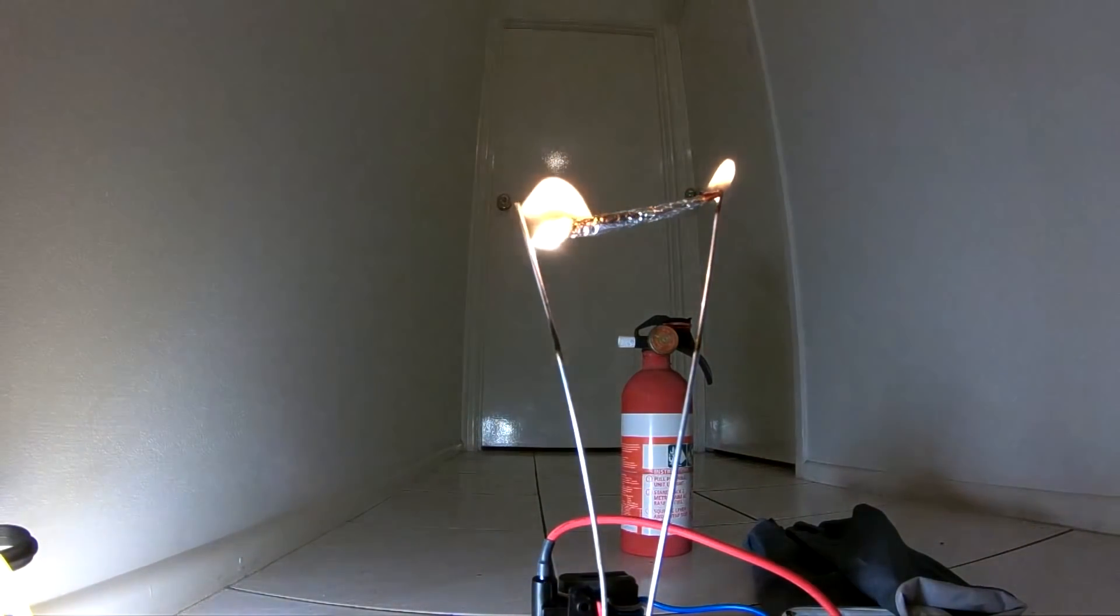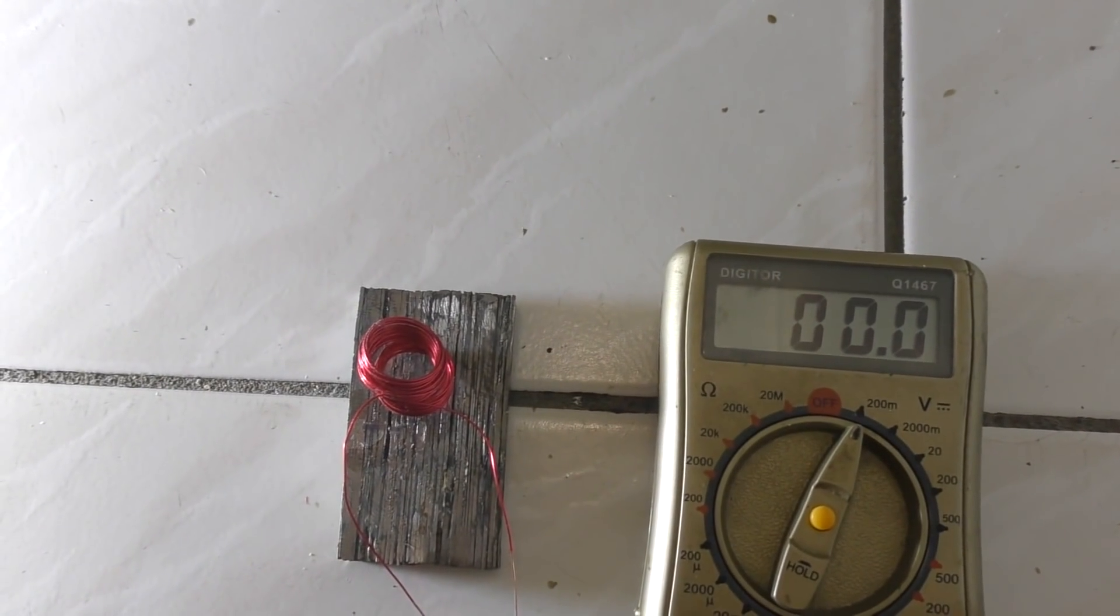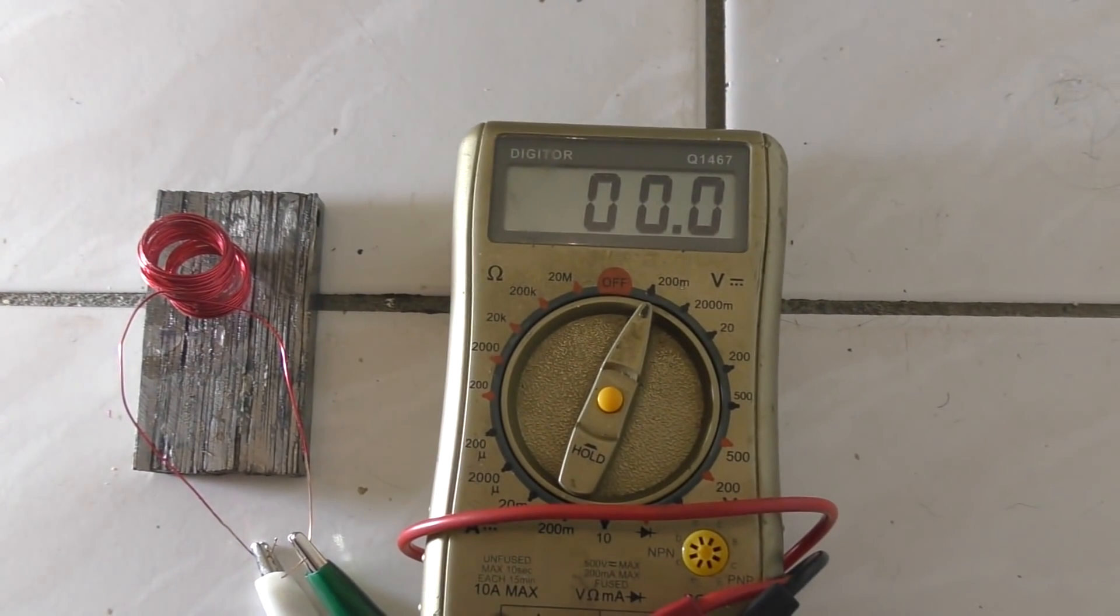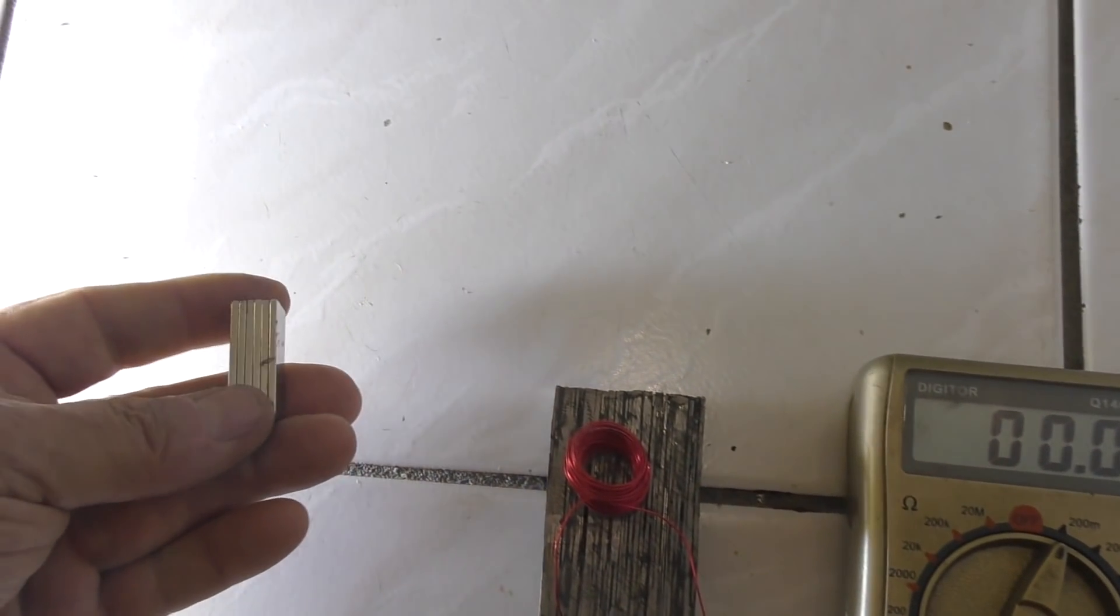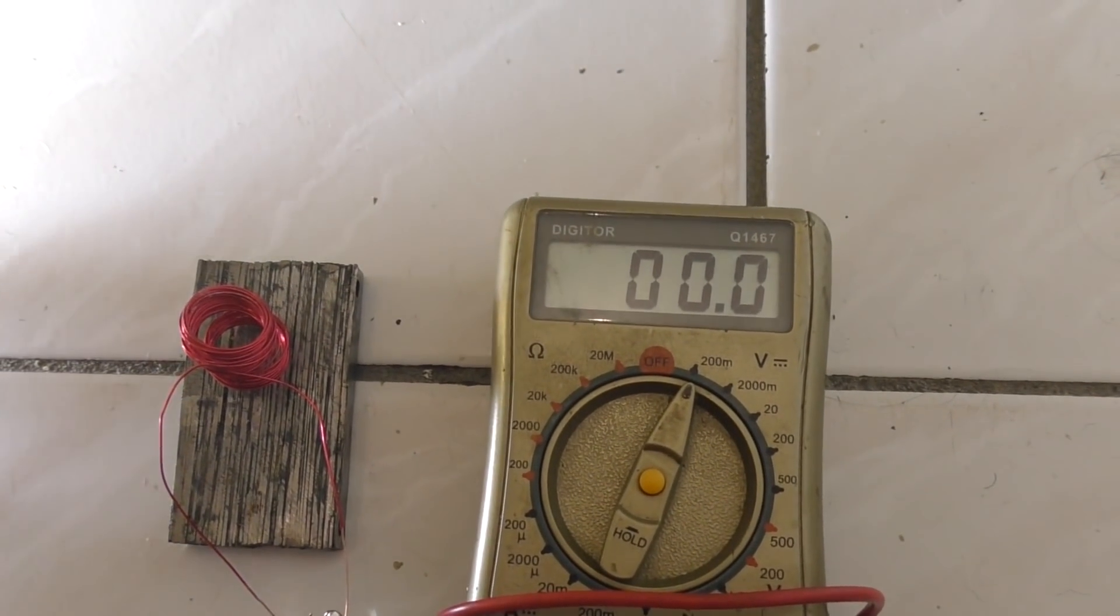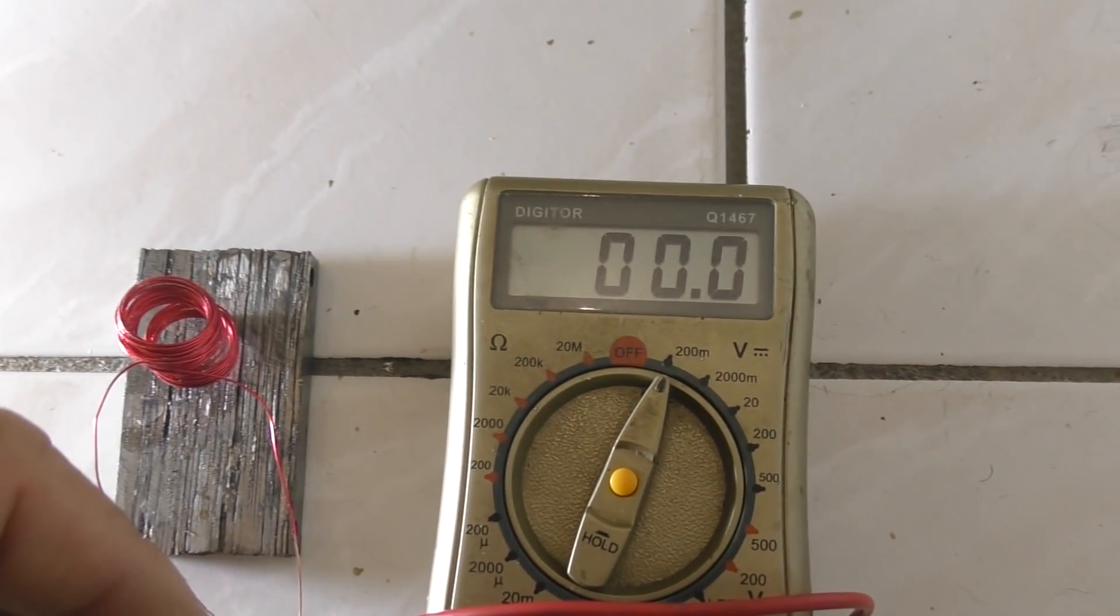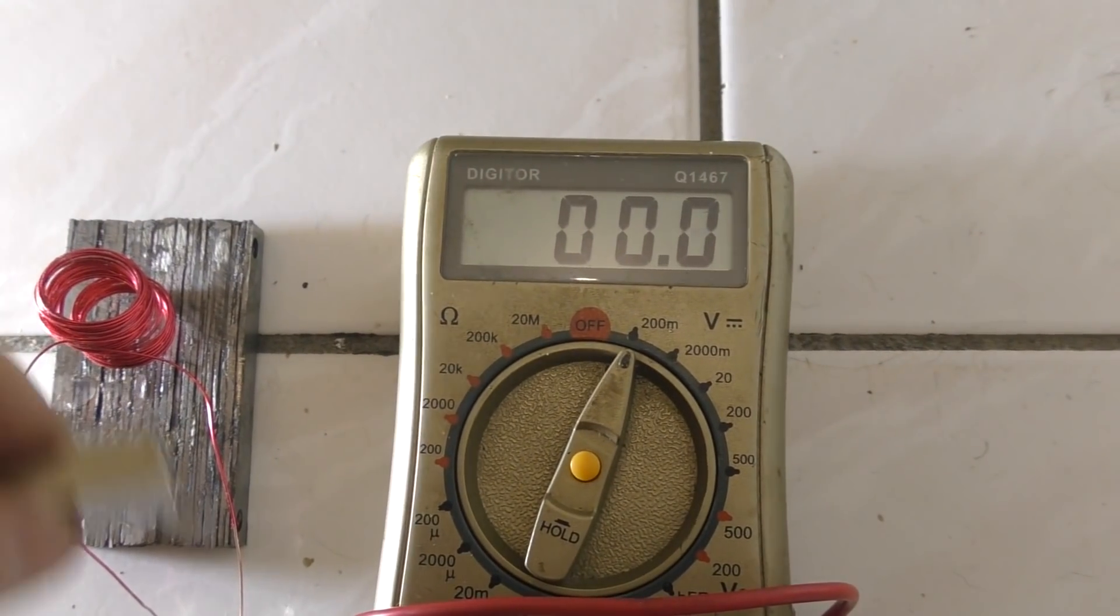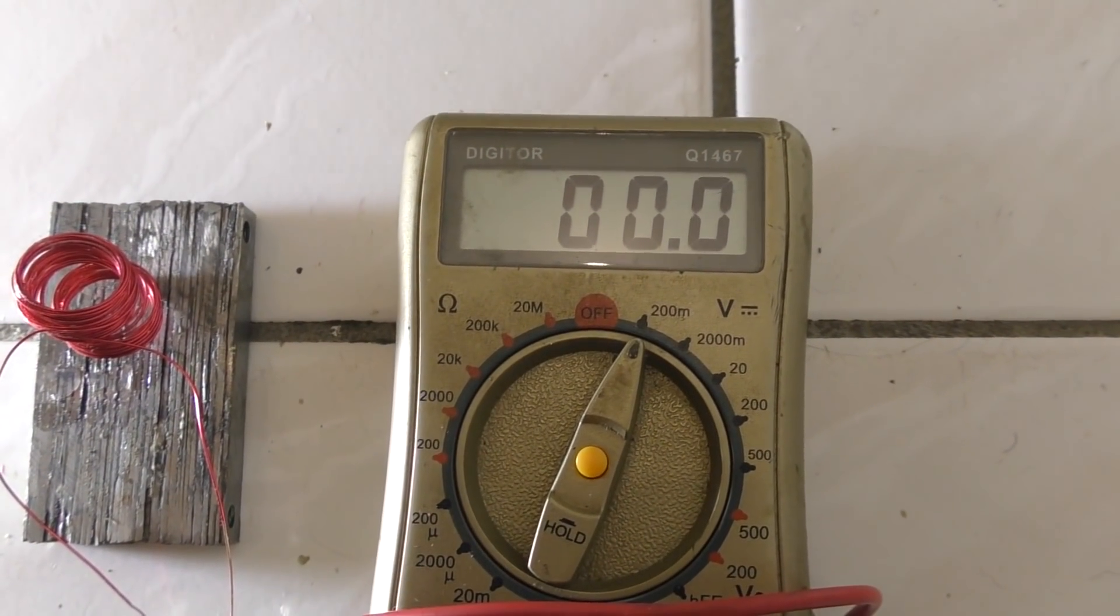Now you're probably wondering what that's got to do with an electrical super magnet, but just keep watching and you'll see. Here I have a coil of wire hooked up to a multimeter. Now if I take these rare earth magnets and pass that over the top or even through, it should register some power. The closer I get, the more power.